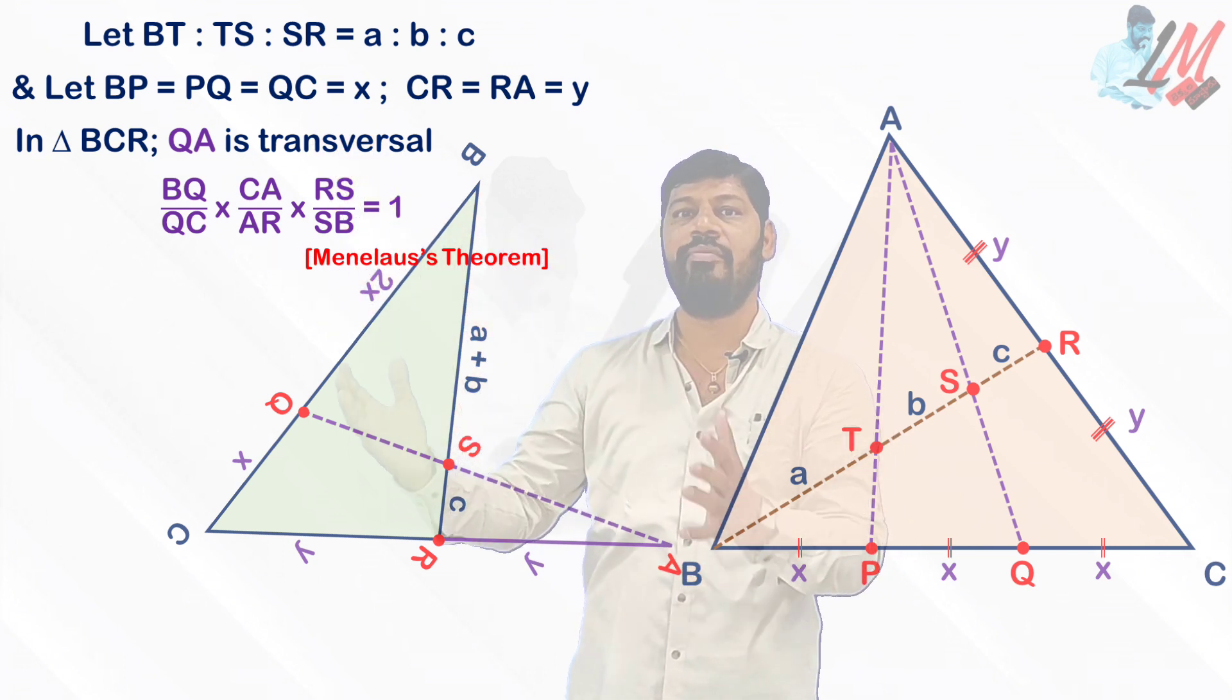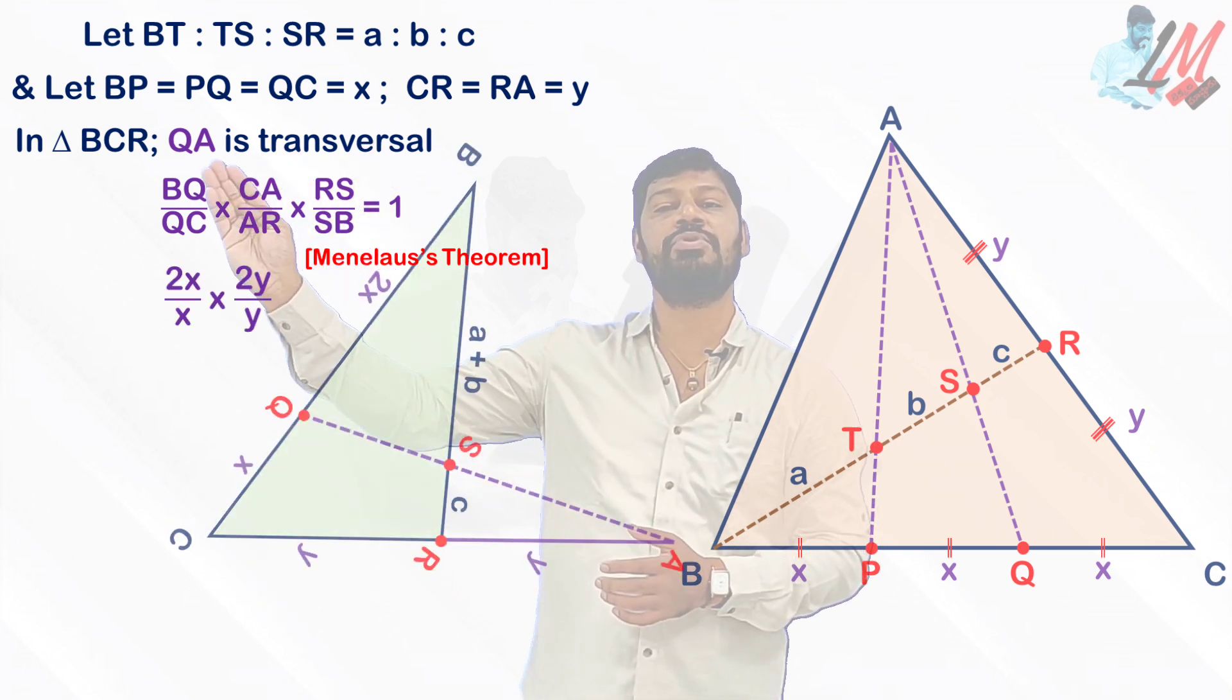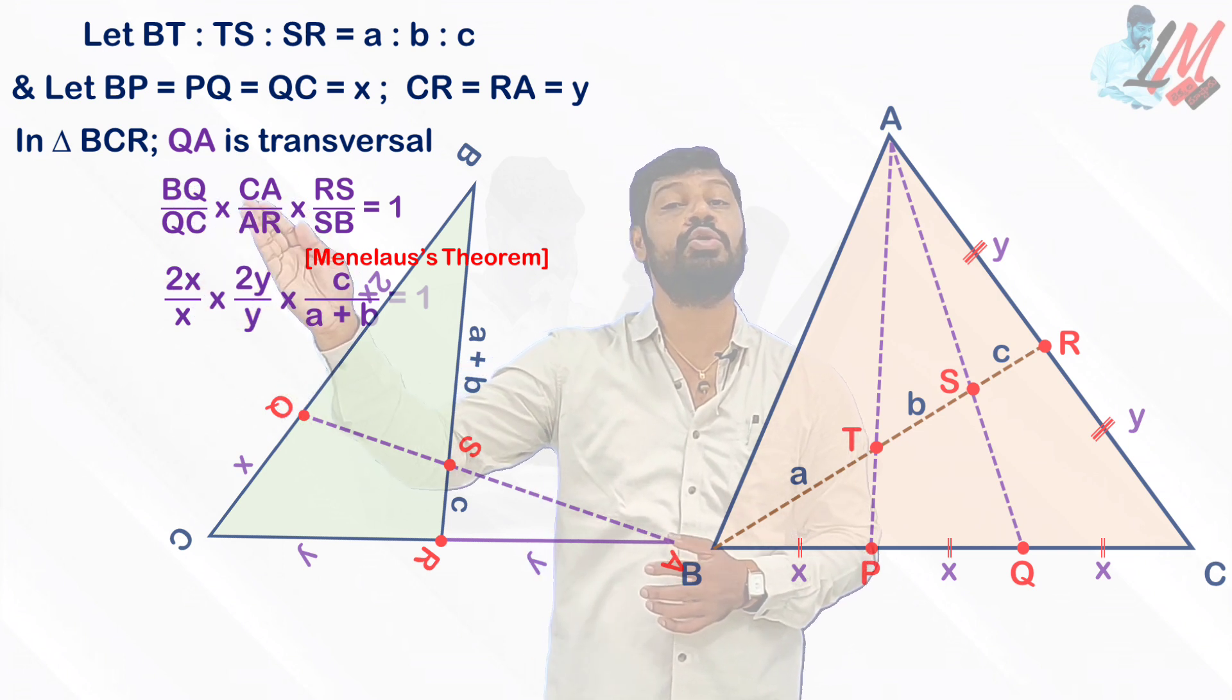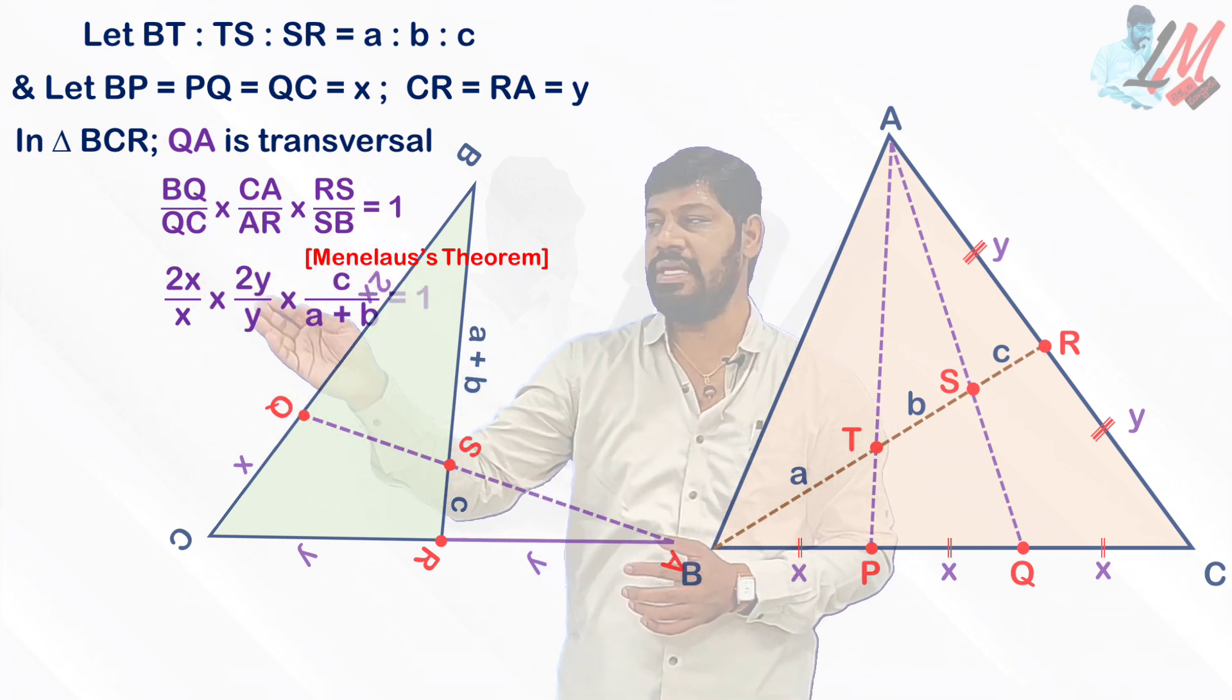BQ by QC into CA by AR into RS by SB equal to 1. So simply with the help of Menelaus's theorem you can understand this. So just I am substituting the values here. So what you are going to get: 2X by X into 2Y by Y into C by A plus B.